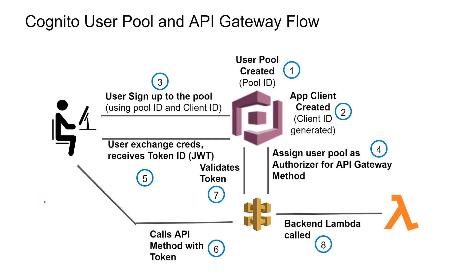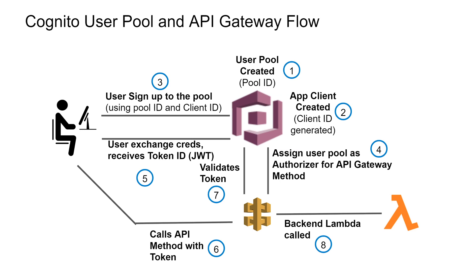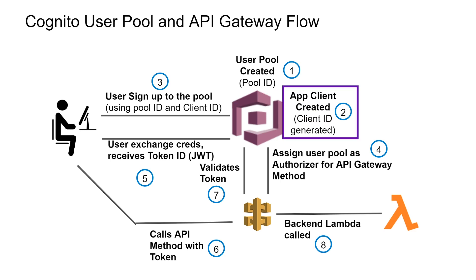That brings us to Cognito User Pool. You can think of Amazon Cognito as a cloud-native identity provider — similar to Active Directory or Auth0 — that stores your user credentials (user ID and password). The first step in this flow is to create a user pool in Cognito. Then you create an application client, which gives you a Cognito User Pool client ID used to generate authentication tokens. Next, as a user, you sign up to the pool using the pool ID and client ID.